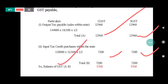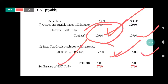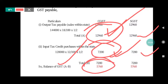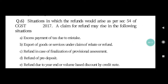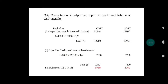Now we deduct to find the GST payable. GST payable = output tax minus input tax. Output tax CGST is 12,960, input tax CGST is 7,200, so GST payable CGST = 5,760. Similarly, SGST: 12,960 minus 7,200 = 5,760. This is the 2020 question solution.